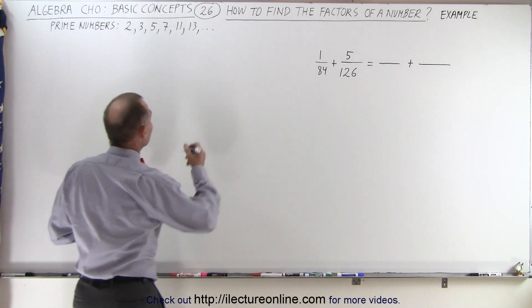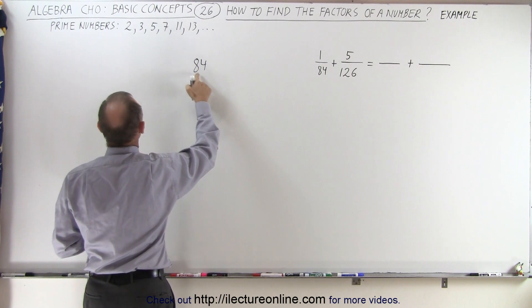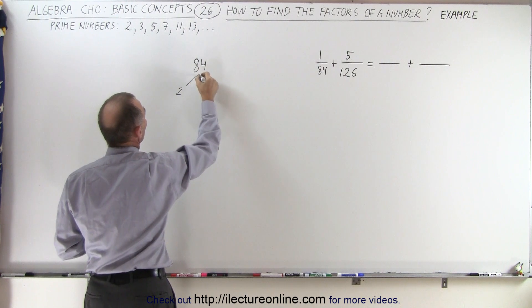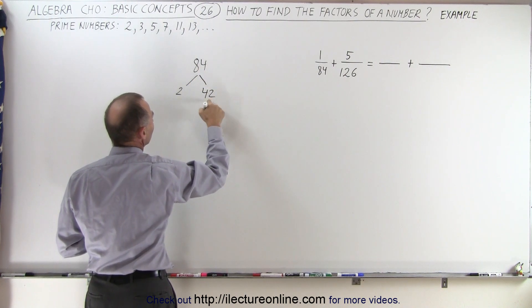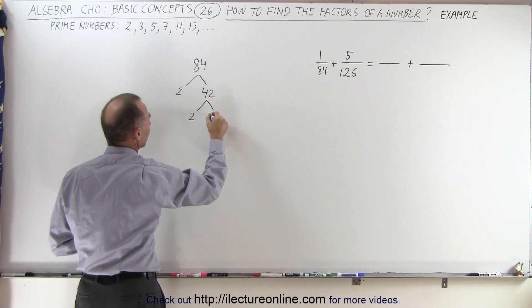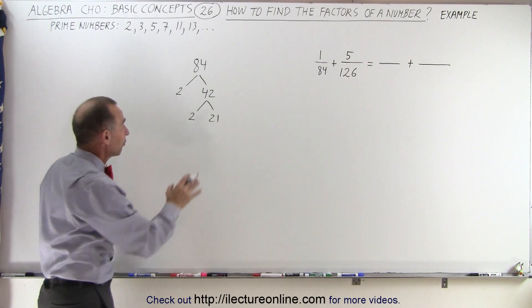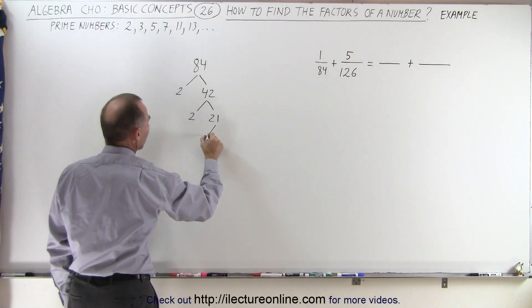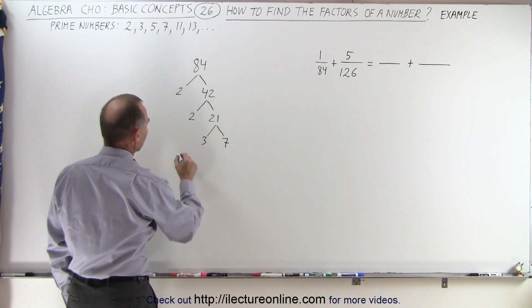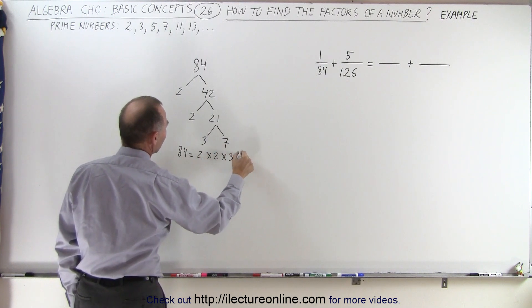Take the number 84 and divide it by its smallest prime factor, which is 2. 2 goes into 84 42 times. It's still even, so continue with 2. 2 goes into 42 21 times. Now we have an odd number divisible by 3, the next prime number. Divide by 3 to get 7. So 84 equals 2×2×3×7.